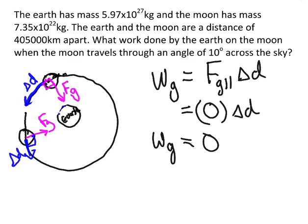That's actually a good thing. The earth is pulling on the moon, but it's not adding energy to the moon or taking energy away. If the earth were taking energy away — giving a negative work — the moon would slowly spiral in and hit the earth. And if gravity were adding energy — giving a positive work — the moon would spiral out and we'd eventually lose our moon, which would be kind of sad too. So it's a good thing that the work done by gravity on the moon is actually zero.